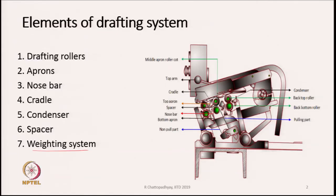You can also see that the drafting unit is a little bit inclined, as shown in the diagram. We will learn why it is inclined — there is a reason for that. Now let us look at these elements one after the other.